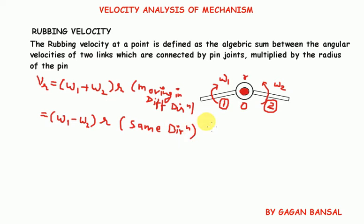For this particular case, omega one is moving in the anti-clockwise direction and omega two is moving in the clockwise direction — so they have different directions. Therefore, the rubbing velocity is omega one plus omega two into r.